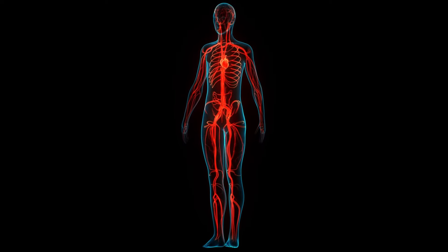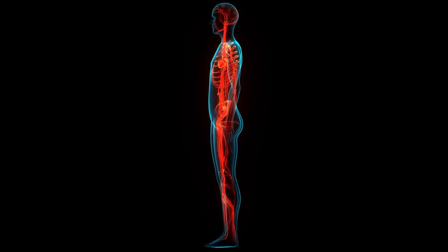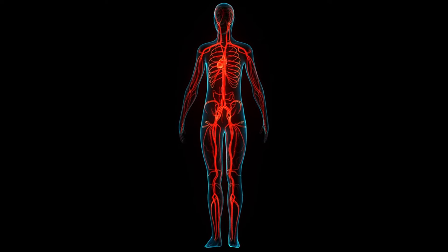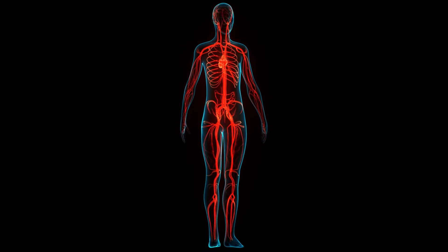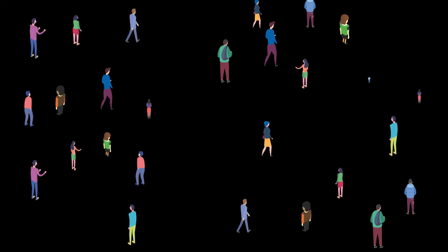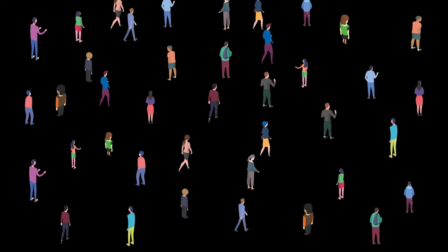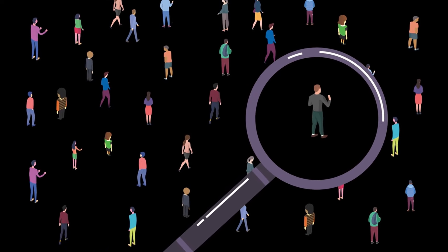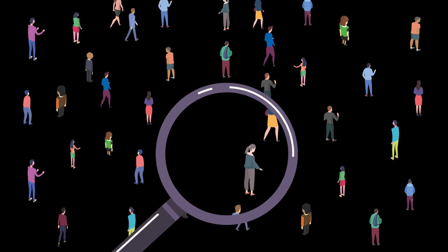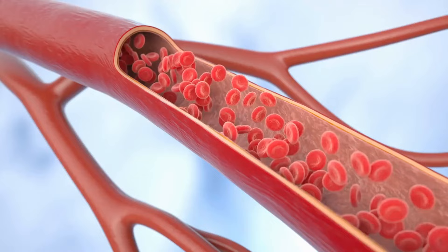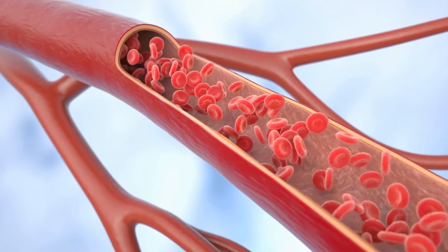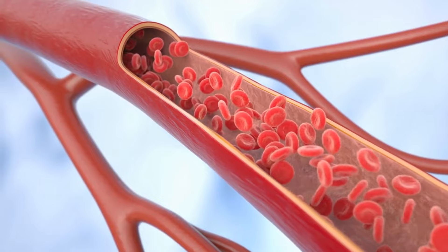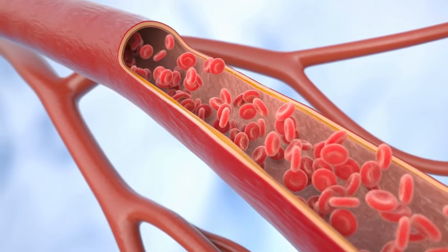The human body, a marvel of biological engineering, contains approximately 4.5 to 6 liters of blood. This volume is subject to fluctuations influenced by factors such as age, sex, weight, and overall health. Blood, a complex and vital fluid, makes up about 7 to 8 percent of human body weight.